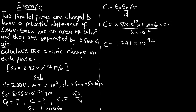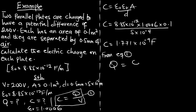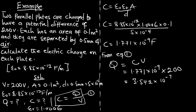Now using C = Q/V, the charge Q = C × V = 1.771 × 10⁻⁹ × 200 = 3.542 × 10⁻⁷ coulombs. This is the same as 0.3542 microcoulombs. This is the charge on each capacitor. Thank you for watching this episode.